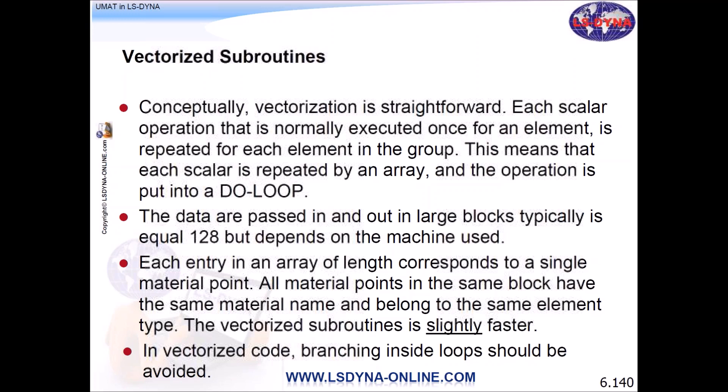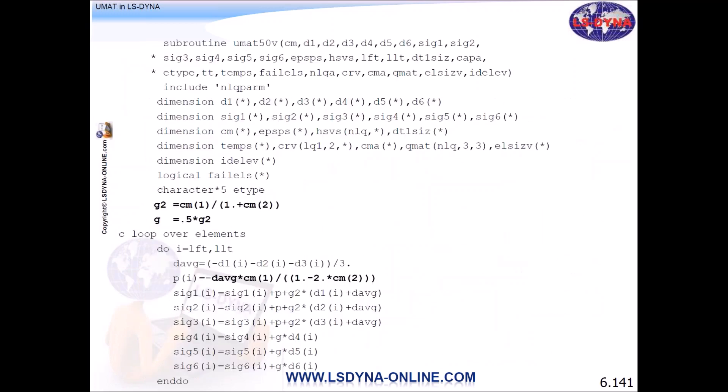So the vectorized subroutine is slightly faster. If you're going to do a vectorized code, branching out or inside the loop is not allowed. I can't have an if statement into the loop and go out of the loop. If I do that, I basically violate the vectorization. The vectorized subroutines have a V at the end of the name. We had UMAT 41 to UMAT 50. Now we're going to have UMAT 41V to UMAT 50V.